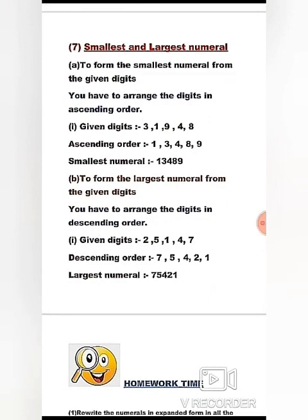To form the smallest numeral from given digits, you arrange the digits in ascending order, that is from small to big. For example, given the digits 3, 1, 9, 4, 8 — arranged in ascending order they become 1, 3, 4, 8, 9 — so the smallest numeral is 13489.